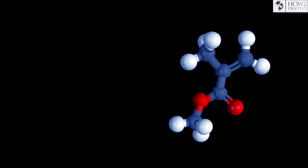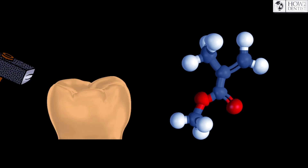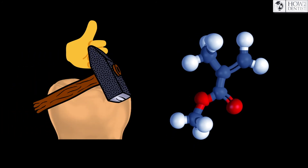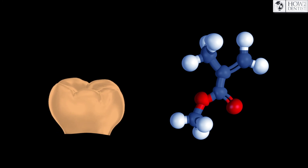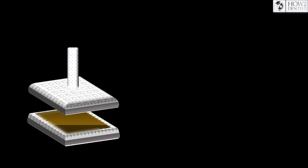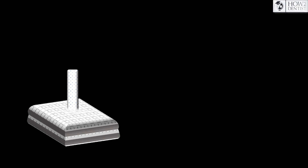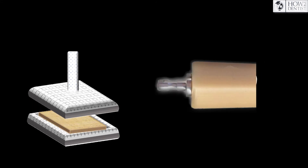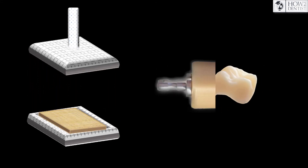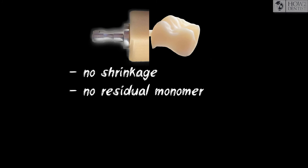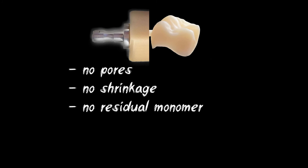For example, to enhance hardness, intermolecular bonds can be shortened, but then there will be a greater percentage of shrinkage. Most of the drawbacks can be eliminated by making resin at a factory as a blank from which ready crowns can be milled without shrinkage, pores, and residual monomer. But such crowns require additional preparation before fixing.